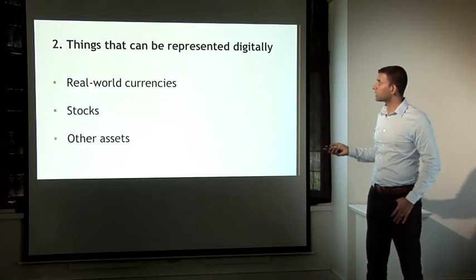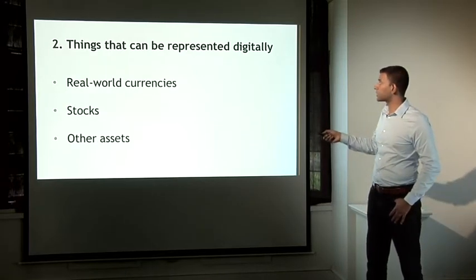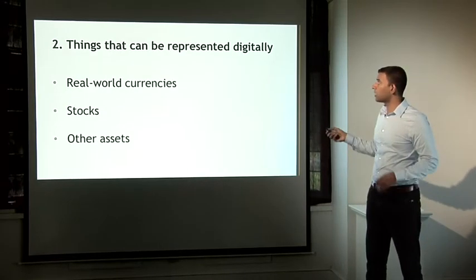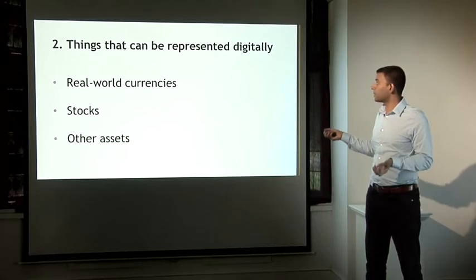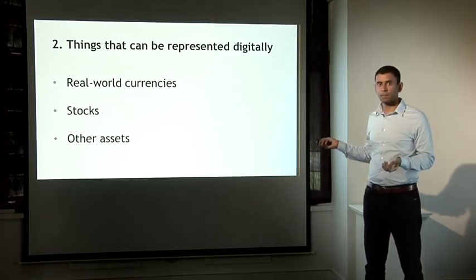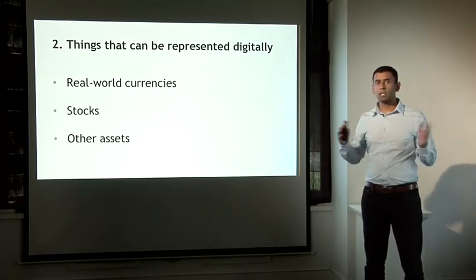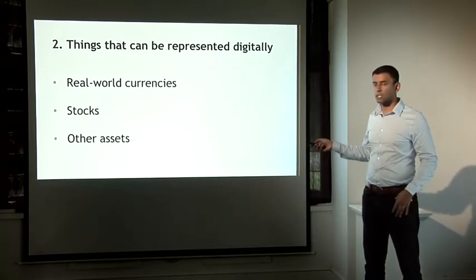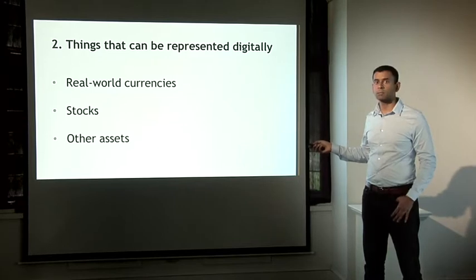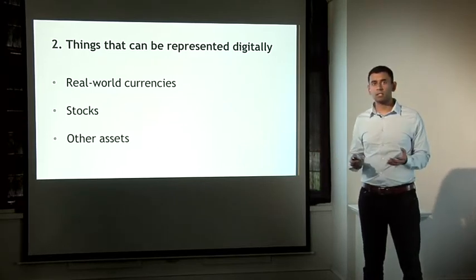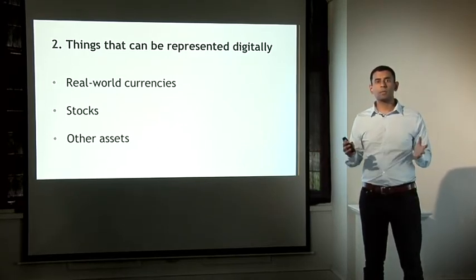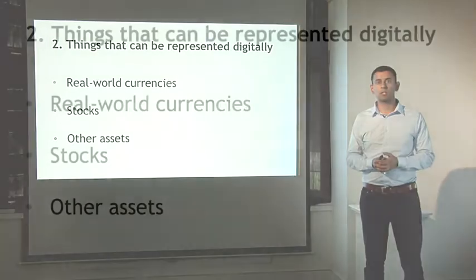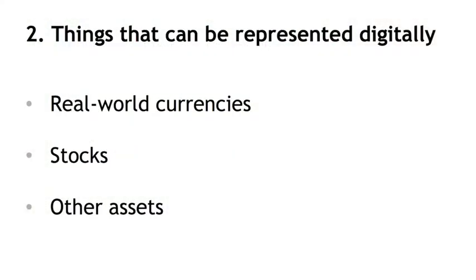The next category is things that aren't inherently digital but can be represented digitally. This is a big category: real-world currencies of all kinds, stocks, bonds, and other assets. This is where perhaps a huge amount of the excitement is around how to use blockchains for other things.